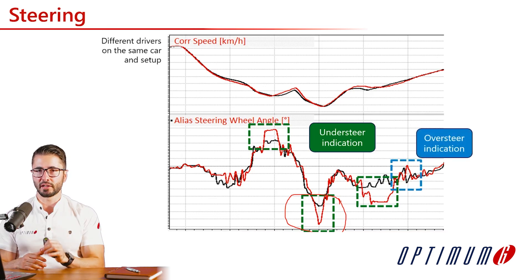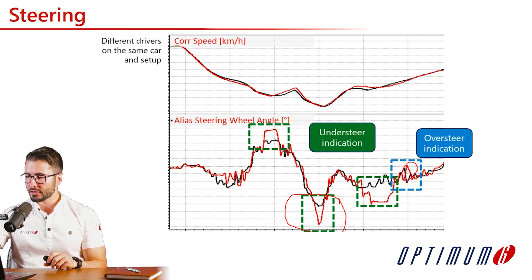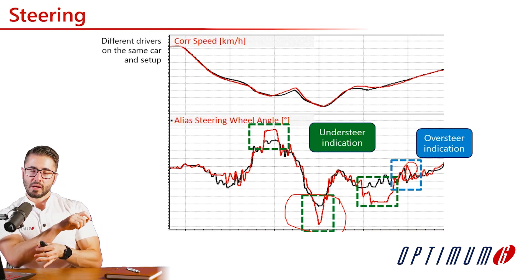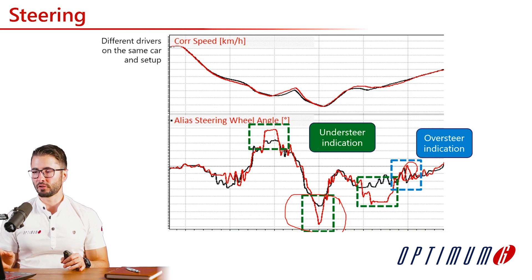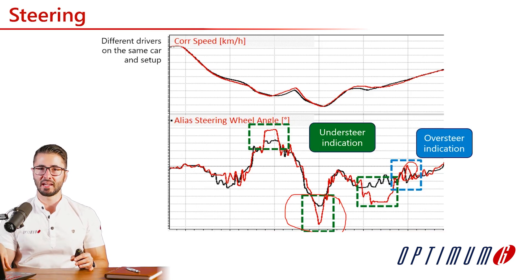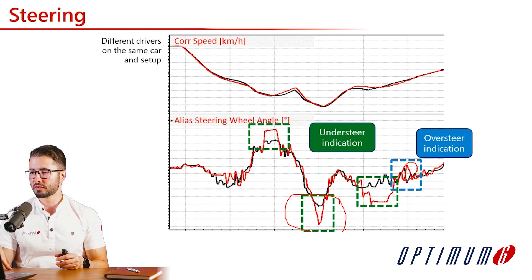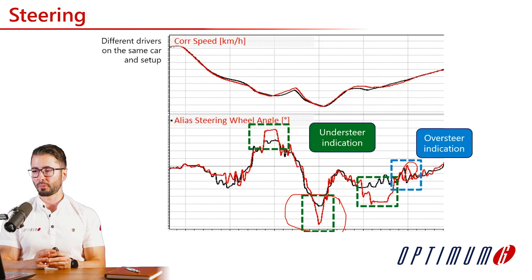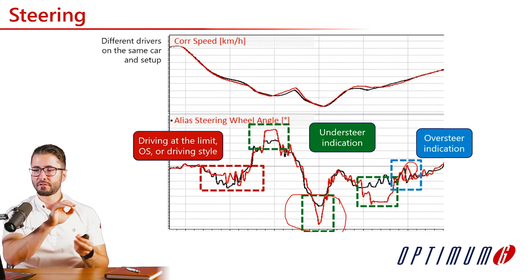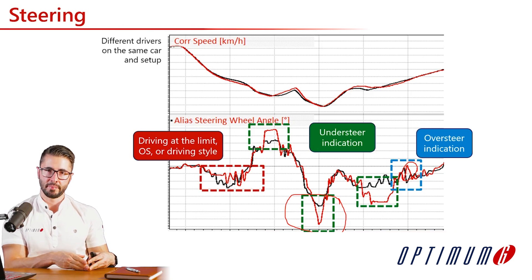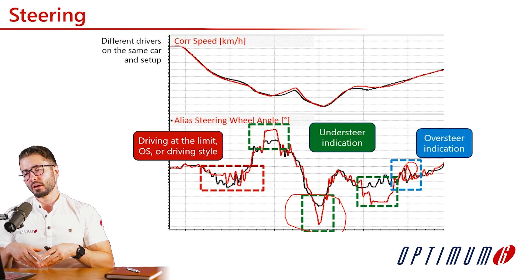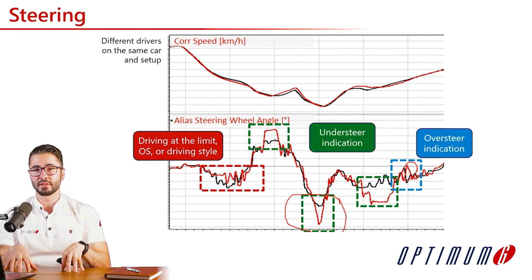We have another video explaining how the driver can induce understeer or oversteer with the throttle or brakes. We also see an oversteer correction — the driver is steering to the left even though the corner is to the right, indicating corrections. It's interesting to see both big understeer and oversteer corrections in the same corners for this red driver, which could be induced by bumps, curbs, or throttle application. The high-frequency corrections could indicate the driver is at the limit, experiencing instability, or it is their driving style — it's important to discuss this with the driver.